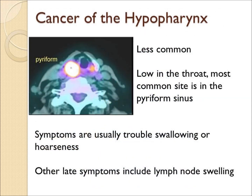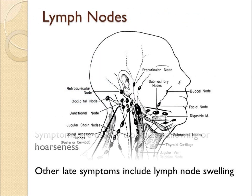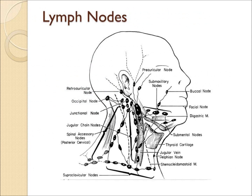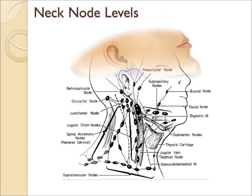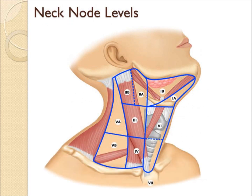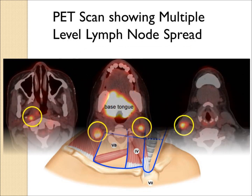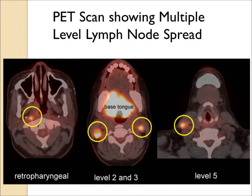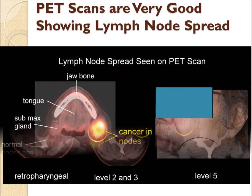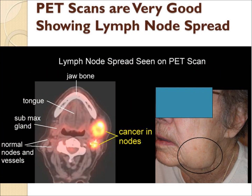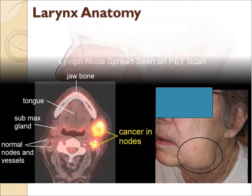The hypopharynx is the lower part of the throat or pharynx and is less common. The piriform sinus is the most common site. Patients have trouble swallowing, hoarseness, or a lump or swollen lymph node in the neck. There are extensive lymph nodes throughout the face and neck, as well as deeper lymph nodes in the throat, often divided into different levels — level 2 and 3 are the most common. PET scans show these lymph nodes quite nicely, as seen in this patient with advanced base of tongue cancer in multiple lymph nodes, and another patient with a large visible left neck mass from a swollen lymph node.